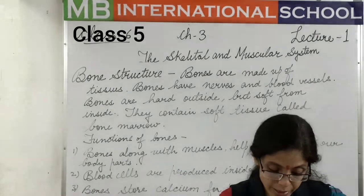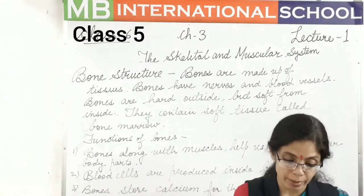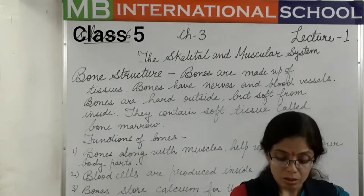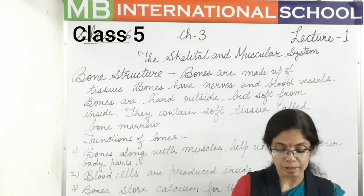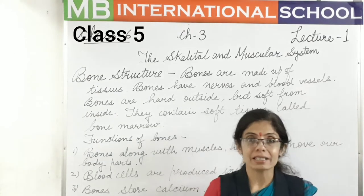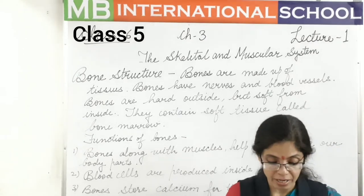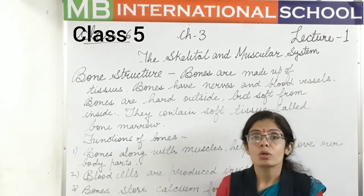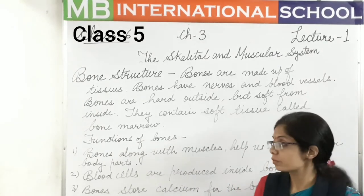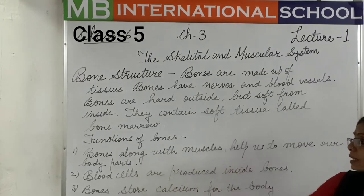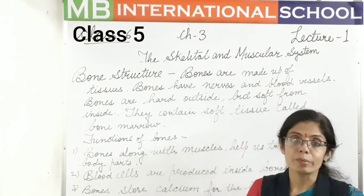On page number 34 of your book, the structure of bone is given - please look at it. The first structure is spongy bone on the inside. The outside part is compact, hard, and tough. Inside is bone marrow, in which blood cells are produced.